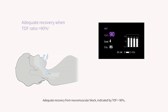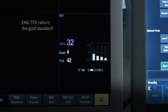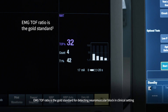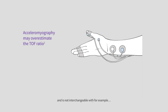Adequate recovery from neuromuscular block, indicated by a TOF ratio higher than 90%, can be reliably determined only with quantitative monitoring. EMG TOF ratio is the gold standard for detecting neuromuscular block in clinical settings and is not interchangeable with, for example, AMG TOF, that may overestimate the recovery by at least 15%.